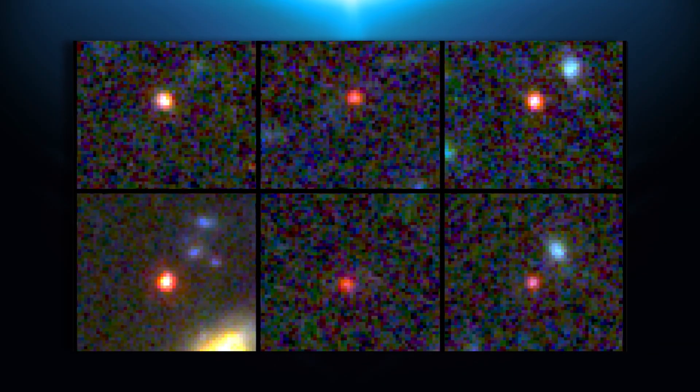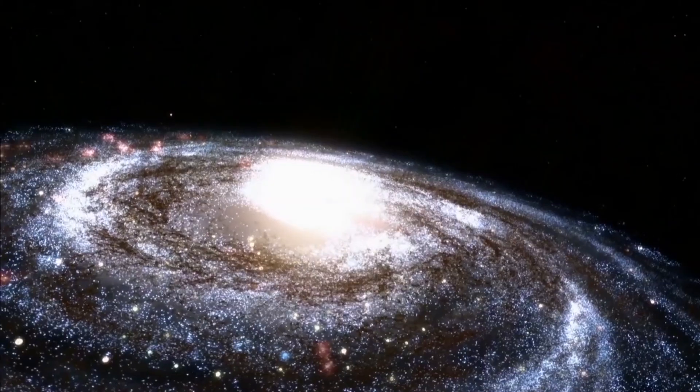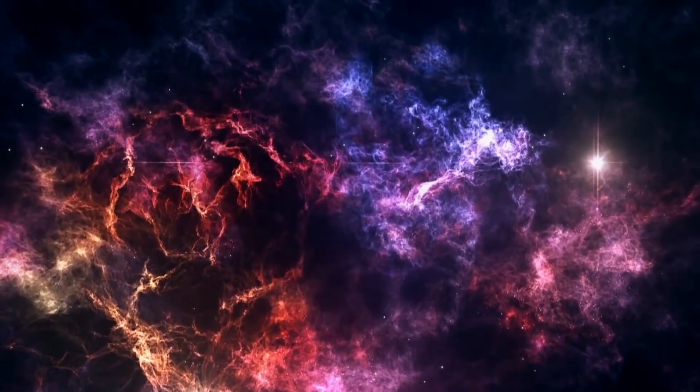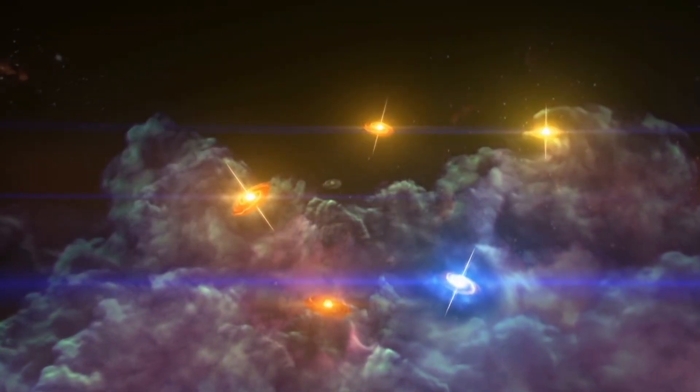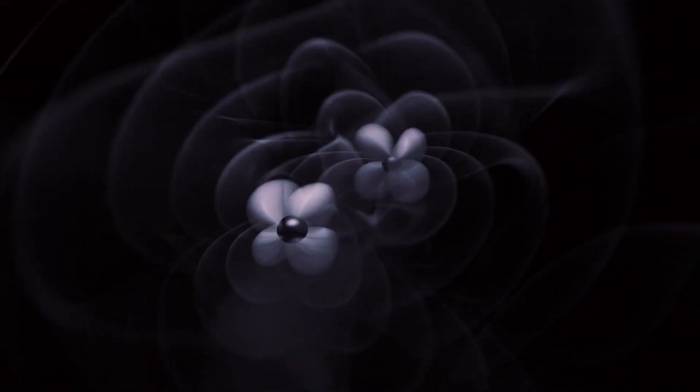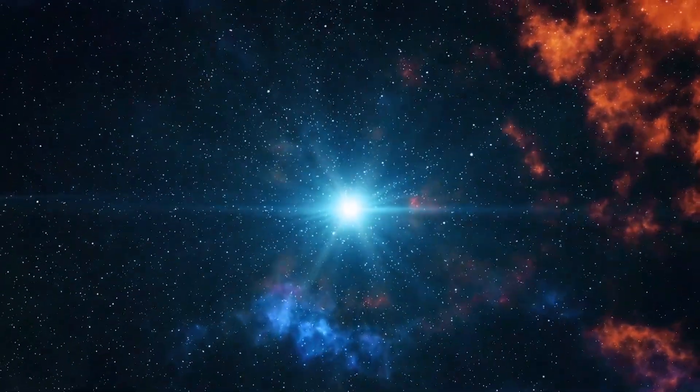In particular, these six galaxies are estimated to have around the same amount of stars back then as the Milky Way does now. Considering the Milky Way only amassed such a huge amount of stars after billions of years of mergers and accretion, it is baffling that there were galaxies so enormous not even one billion years after the Big Bang.